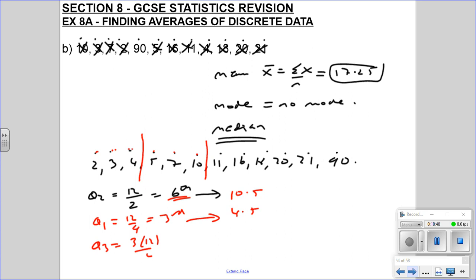And Q3, 3 lots of 12 over 4, so that's 36 divided by 4, which is 9, so that's the ninth, but again, we need to go halfway between, because this is a whole number, so 1, 2, 3, 4, 5, 6, 7, 8, 9, so halfway between 18 and 20 is 19. Done.